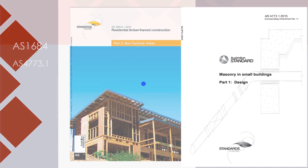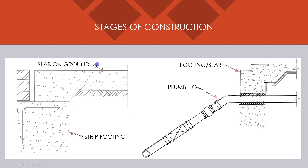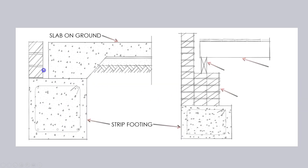The stages of construction begin with building the footings and sanitary drainage under the slab. The footing could be either a ground beam where you pour the slab on ground at the same time, or a strip footing which has separate pours — so you pour the strip footing and then later on you pour the slab.